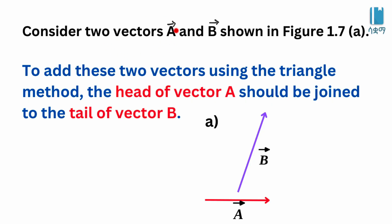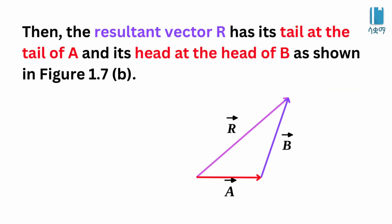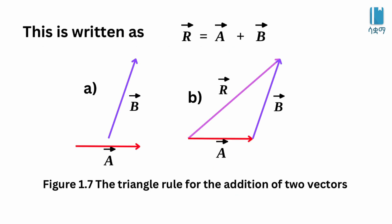For vector A, we take the head of vector A and join it to the tail of vector B. Then from the tail of vector A to the head of vector B, we obtain the resultant vector. Vector R equals vector A plus vector B. This is the algebraic representation.